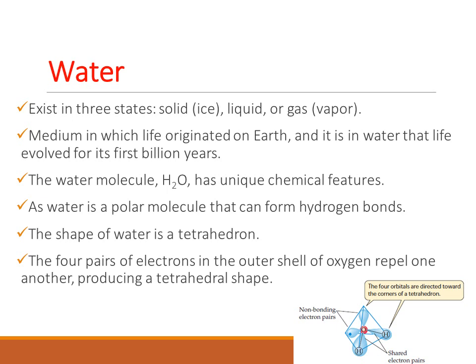Why is water tetrahedral in structure? Because there is a centrally located oxygen atom, and the outer electron pairs of oxygen repel one another, producing a tetrahedral arrangement. The oxygen has four pairs of electrons in its outer shell, and they repel each other, producing a tetrahedral structure.